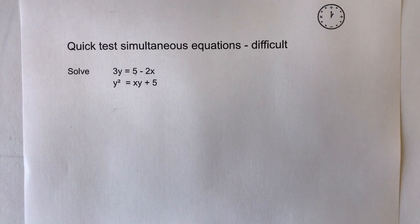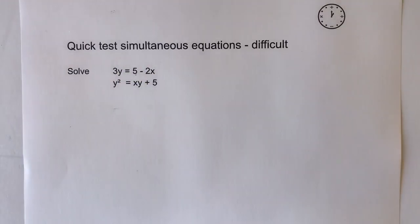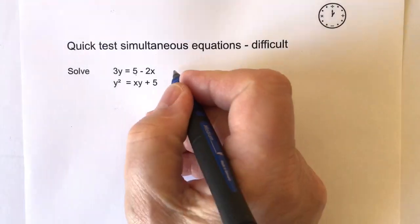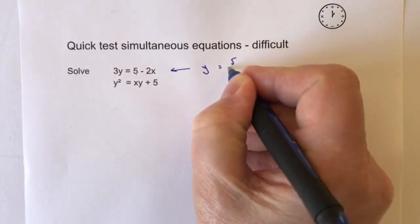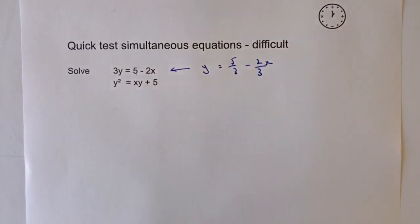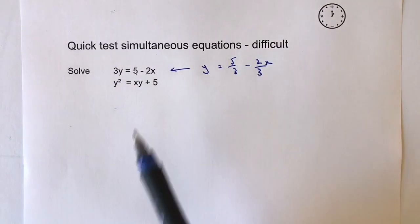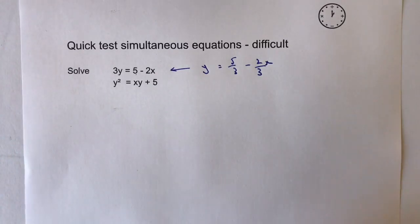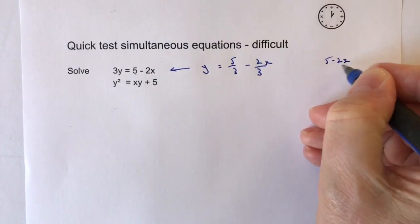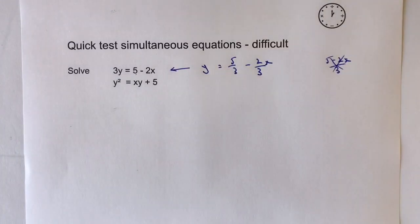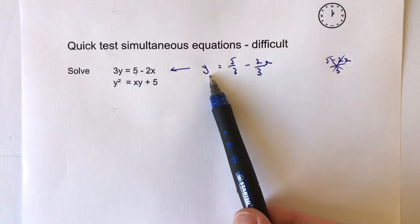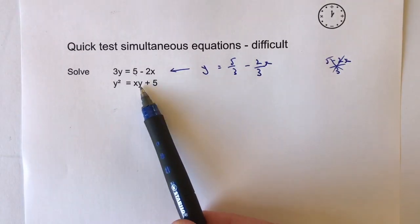So the first thing I've got is a value of 3y equals 5 minus 2x. What I'm going to do with that is divide through both sides by 3. So I'm going to write that particular equation as y equals 5 over 3 minus 2x over 3. The reason I've done that is because it will make it a little bit easier when I feed it into the other equation. I wouldn't suggest writing it as (5 minus 2x) over 3 — you need to be able to work with the individual fractions.